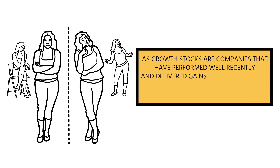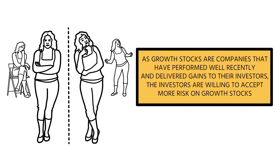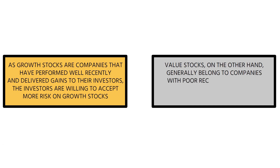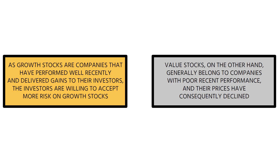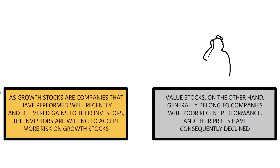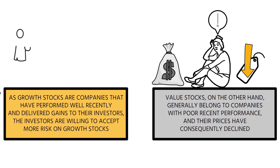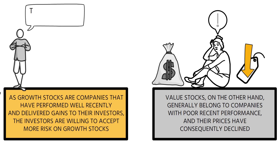As growth stocks are companies that have performed well recently and delivered gains to their investors, those investors are willing to accept more risk on growth stocks. Value stocks, on the other hand, generally belong to companies with poor recent performance and their prices have consequently declined. As investors have experienced the pain of recent losses, they are less willing to accept the risk and apply a higher risk premium to these stocks, driving prices even lower.